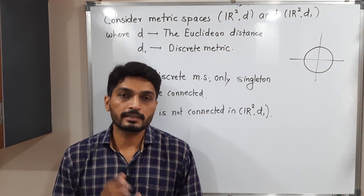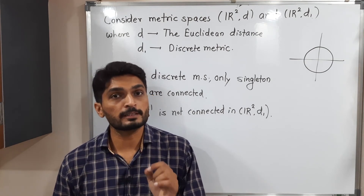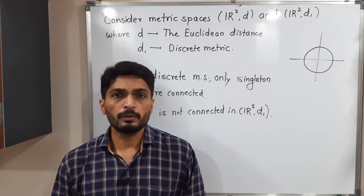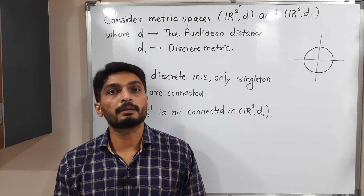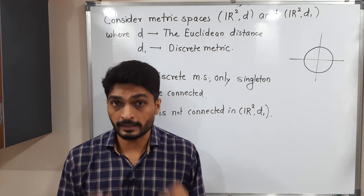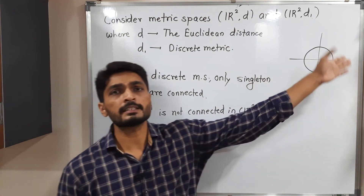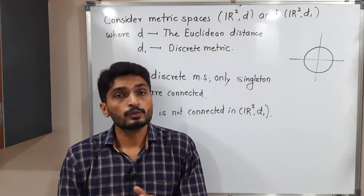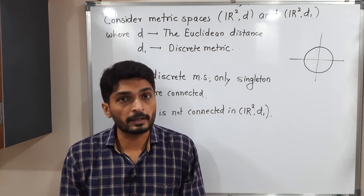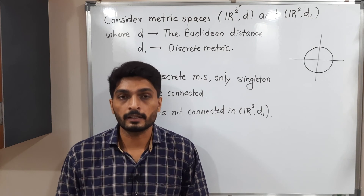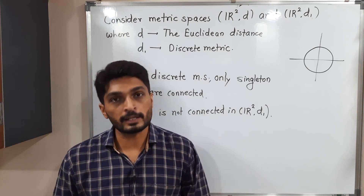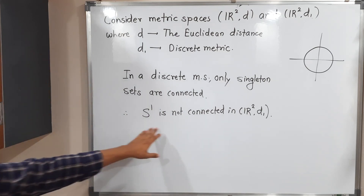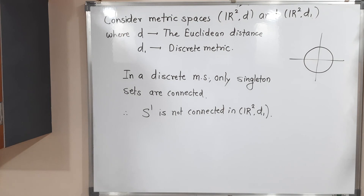Now for the second sub-question: in the metric space R²,D₁, where D₁ is the discrete metric. From previous results, in a discrete metric space only singleton sets are connected sets. Our set S1 has infinitely many elements — it contains all points lying on the circle. Since S1 has more than one element and only singleton sets are connected in a discrete metric, S1 is disconnected in the discrete metric space (R², D₁).